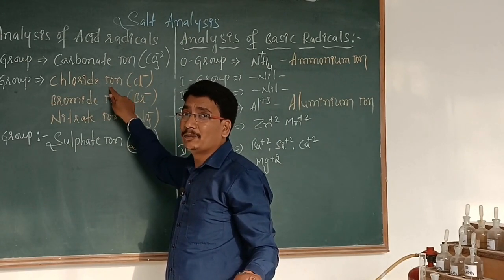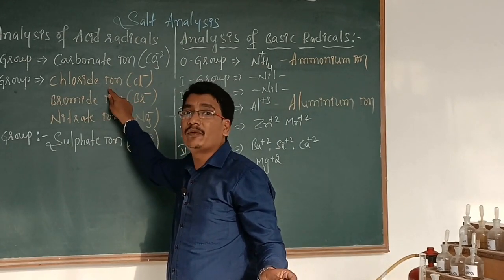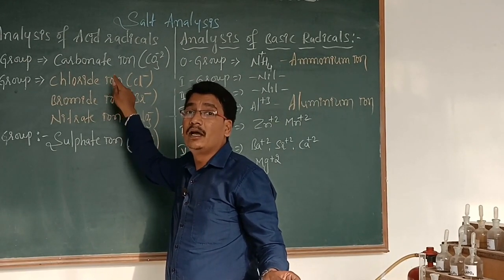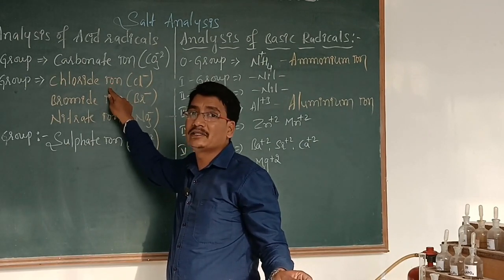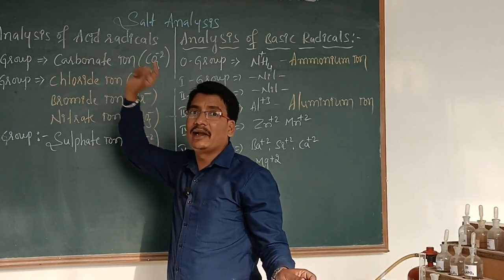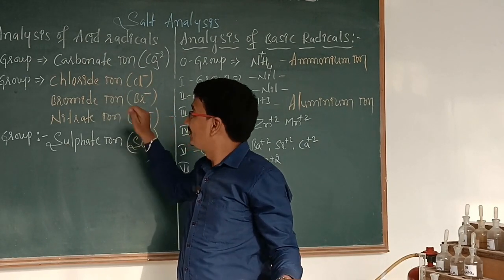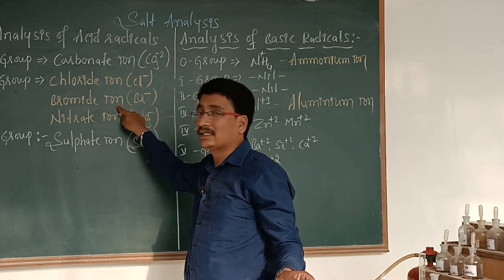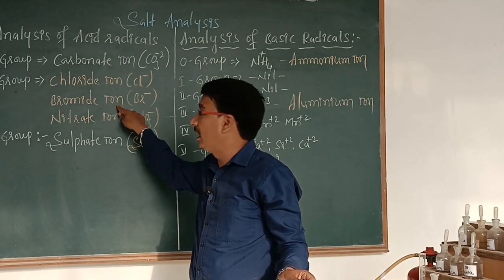For confirmation of chloride ion, salt plus concentrated H₂SO₄: observe a colorless pungent-smelling gas which gives dense white fumes with a glass rod dipped in ammonia — this confirms chloride ion present. Silver nitrate is used as a confirmation test. Similarly, confirmation tests are conducted for bromide and nitrate ions.